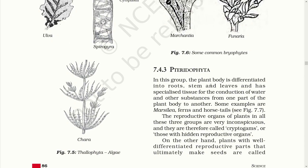Pteridophyta. In this group, the plant body is differentiated into roots, stem and leaves and has specialized tissue for the conduction of water and other substances from one part of the plant body to another. Some examples are Marsilia, Ferns and Horsetail.